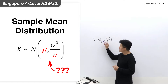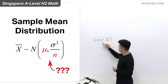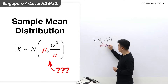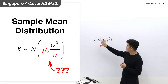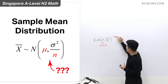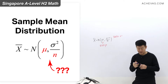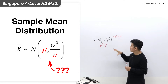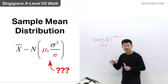First of all, the mean of x-bar is exactly the same as the mean of x, which means the expectation of x-bar is exactly mu. But for the variance of x-bar, it is not just the variance of x. The variance of x is sigma squared, but the variance of x-bar — the variance of the sample mean — is actually sigma squared divided by n.